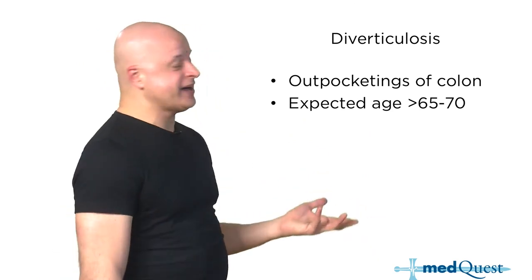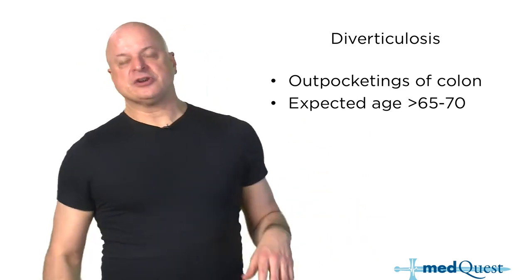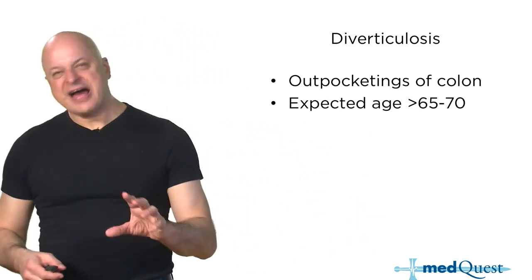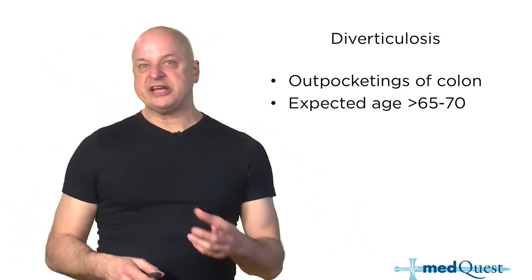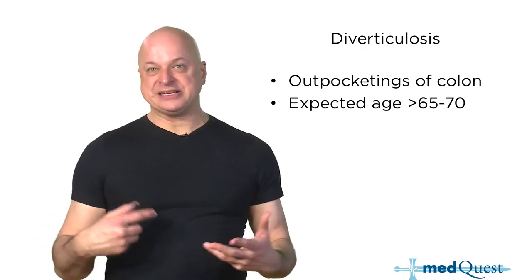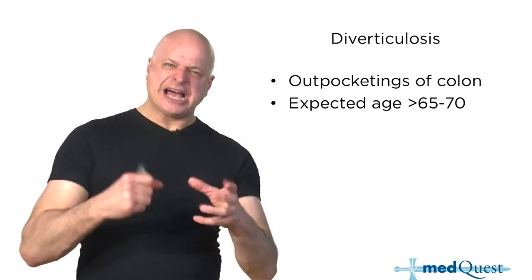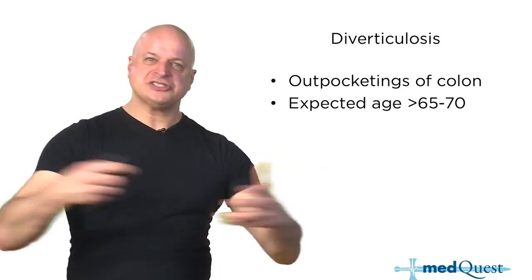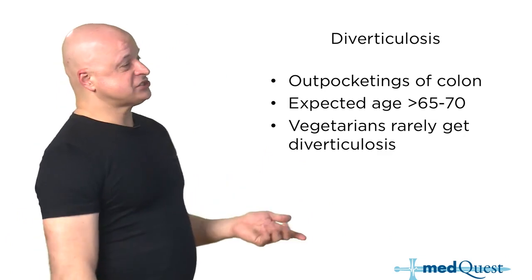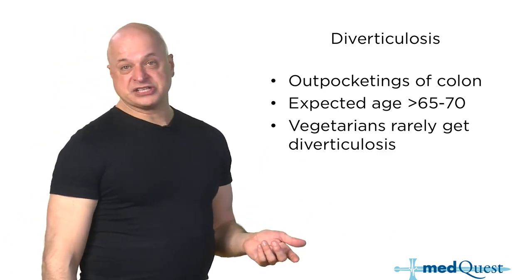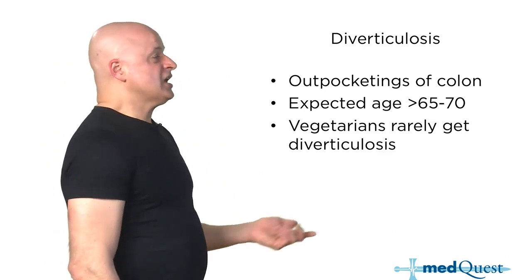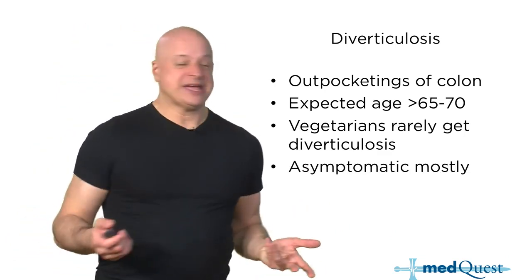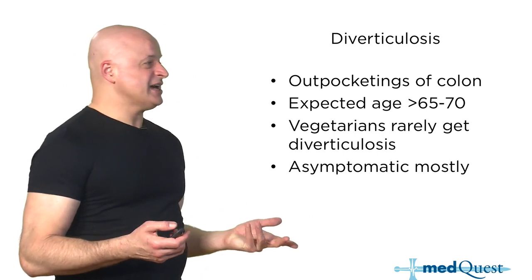It is an expected finding because a low fiber, low vegetable, high meat diet creates higher colonic pressure that causes these outpocketings. Vegetarians just don't get diverticulosis. So if you don't get diverticulosis, you can't get diverticulitis.